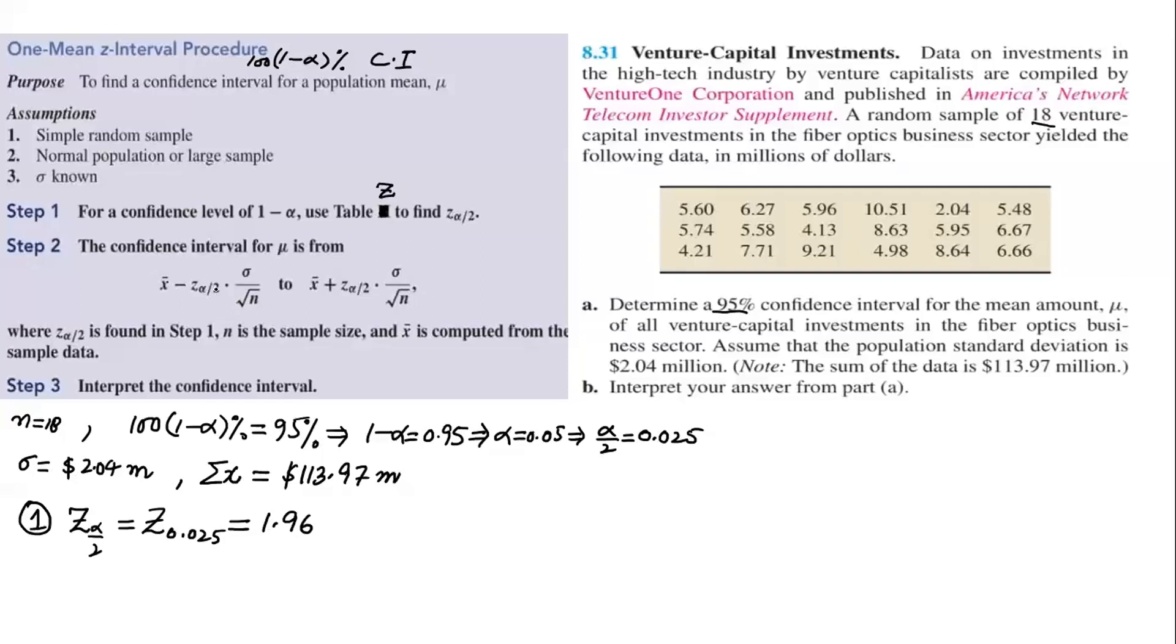Now we have all the things except X bar. So for step 2, we need X bar. X bar is sum X divided by N. Sum X is 113.97 divided by 18. So this value is 6.331. I am not writing the units. Unit is million dollars.